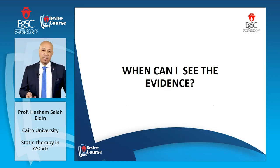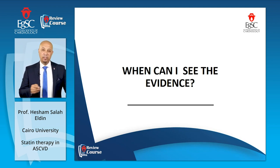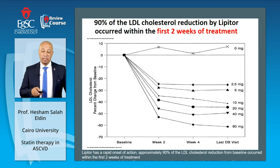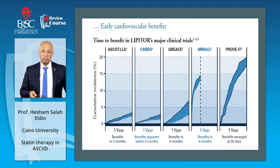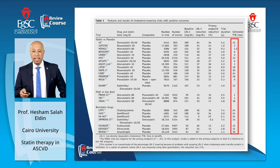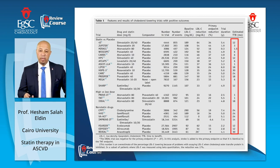Another important question: when can I see evidence from the medication? Are all statins the same in this regard? Some statins show very early effects — for instance, 90% of LDL cholesterol reduction with atorvastatin occurred within the first two weeks of treatment. Benefits appeared in studies like ASCOT lipid-lowering arm at three months, CARDS at six months, GREACE the same, MIRACLE within four months, and PROVE IT within 30 days. However, some medications show estimated time to benefit as late as 18 or 24 months — so they are not all the same.